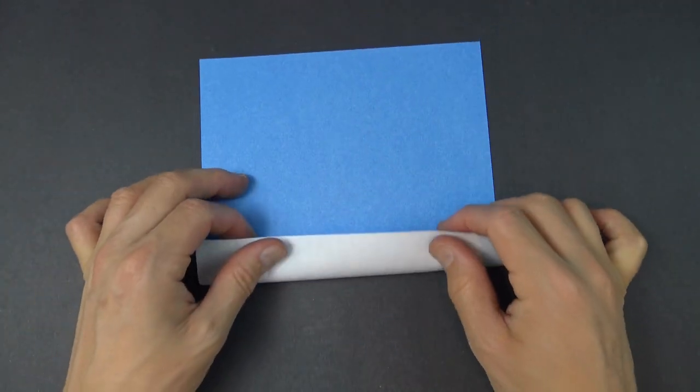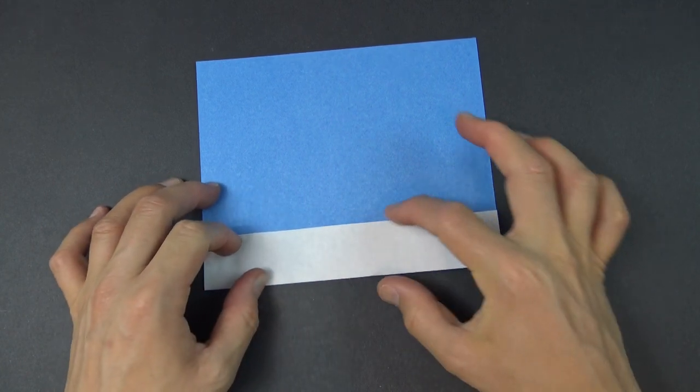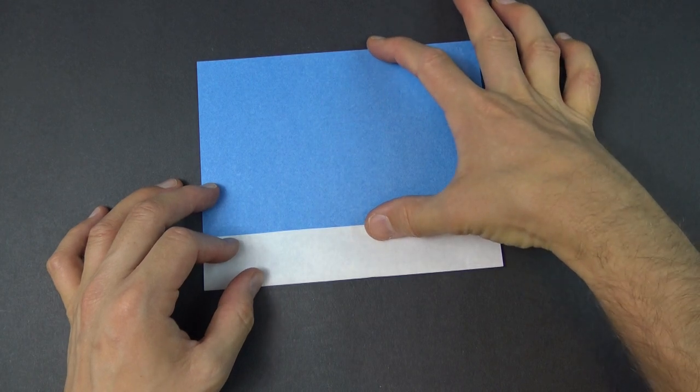Begin colored side up and fold the bottom edge an inch, about like this. So this is going to be the length of the handle and this is going to be the length of the lightsaber.